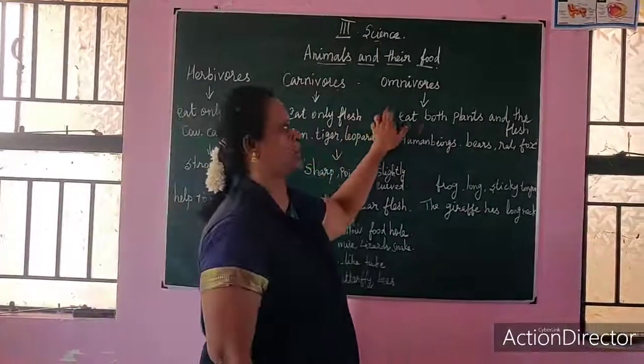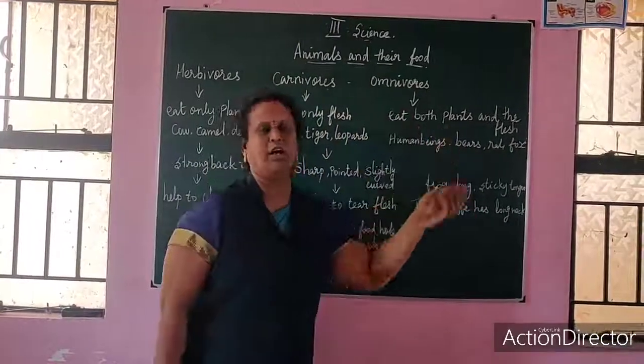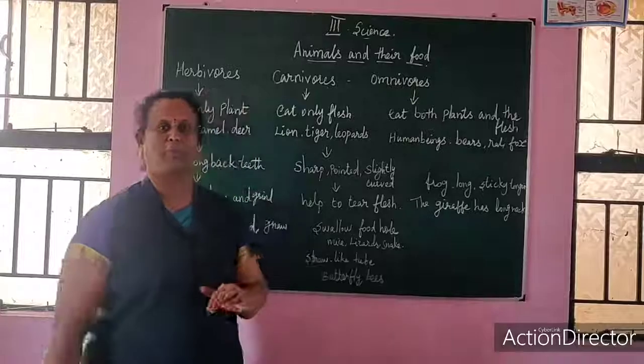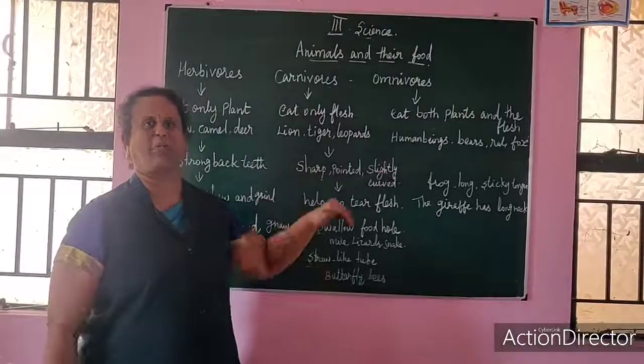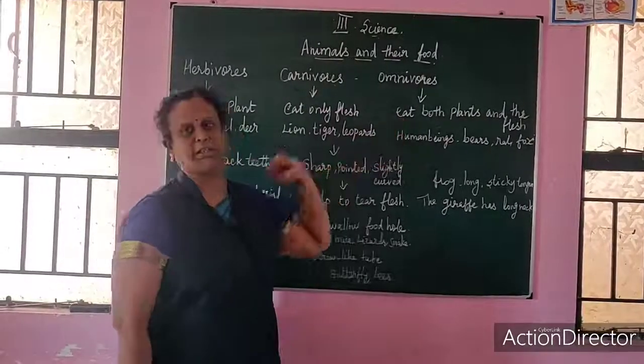Next, omnivores. Omnivores means animals that eat both plants and flesh. That is the omnivore animal.